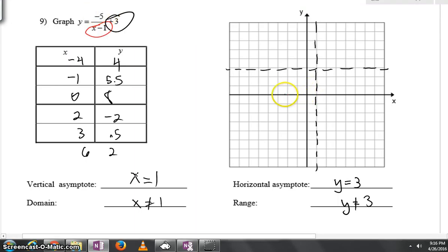If we go 4 to the left, go up 4, we'd be right here. Go 1 to the left, and then you'll go up 5 and a half. And then a smidge in between. At 0, we'll be all the way up at 8, way up here.